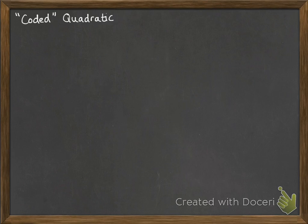Okay, now, moving on to coded quadratics. These can be a little bit difficult to spot that they actually are a quadratic and that you can solve them. So it might look something like this.